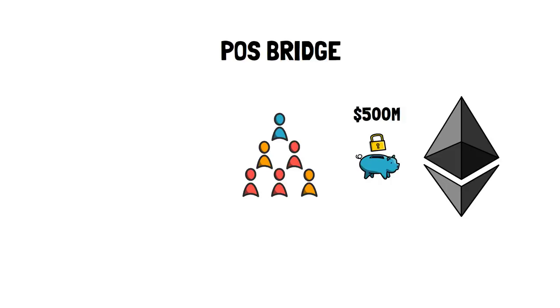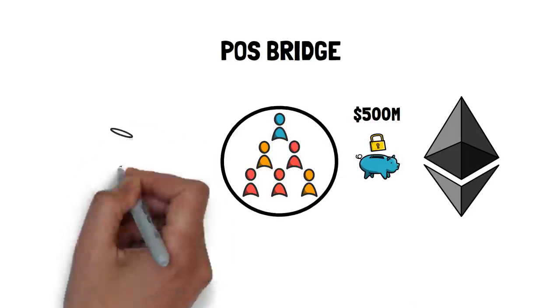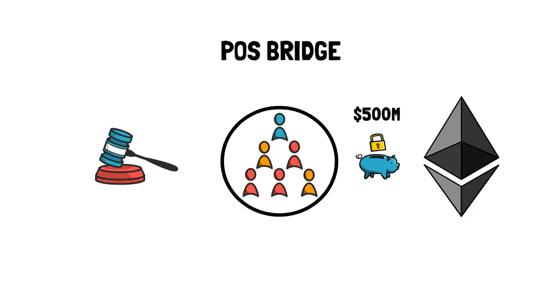To the best of our knowledge, the POS bridge is the only bridge secured by the whole validator set of a bridged chain. Bridges are normally secured by a small set of POA signers, as already mentioned earlier.